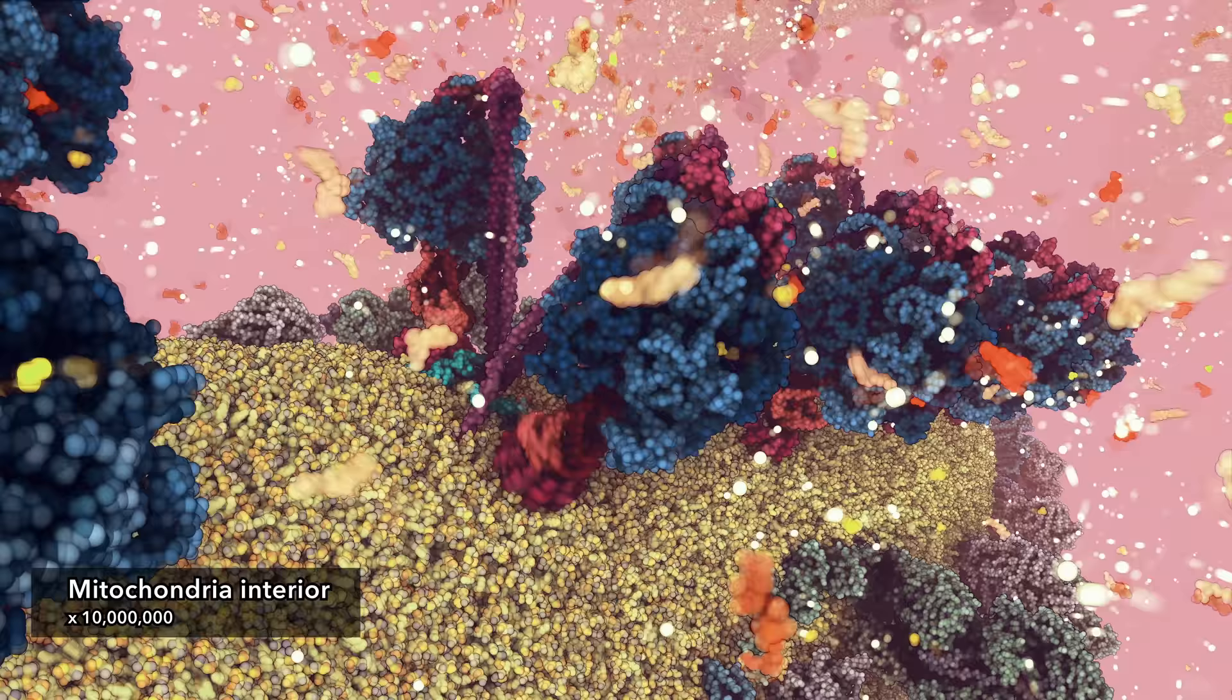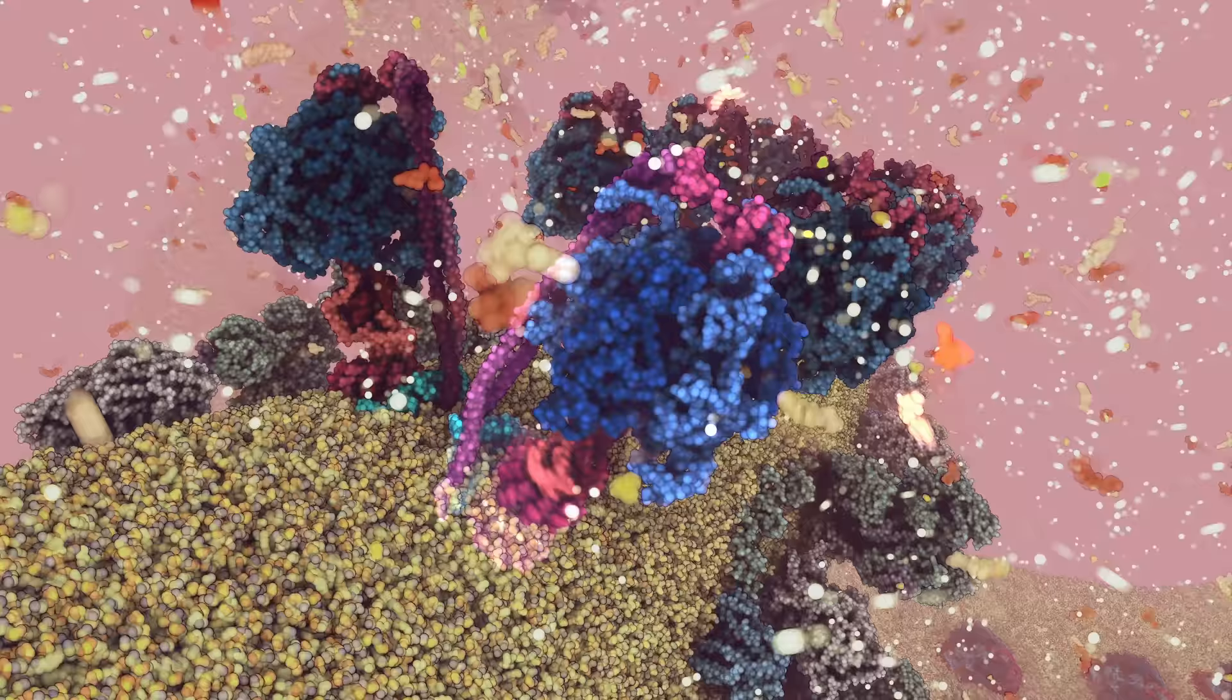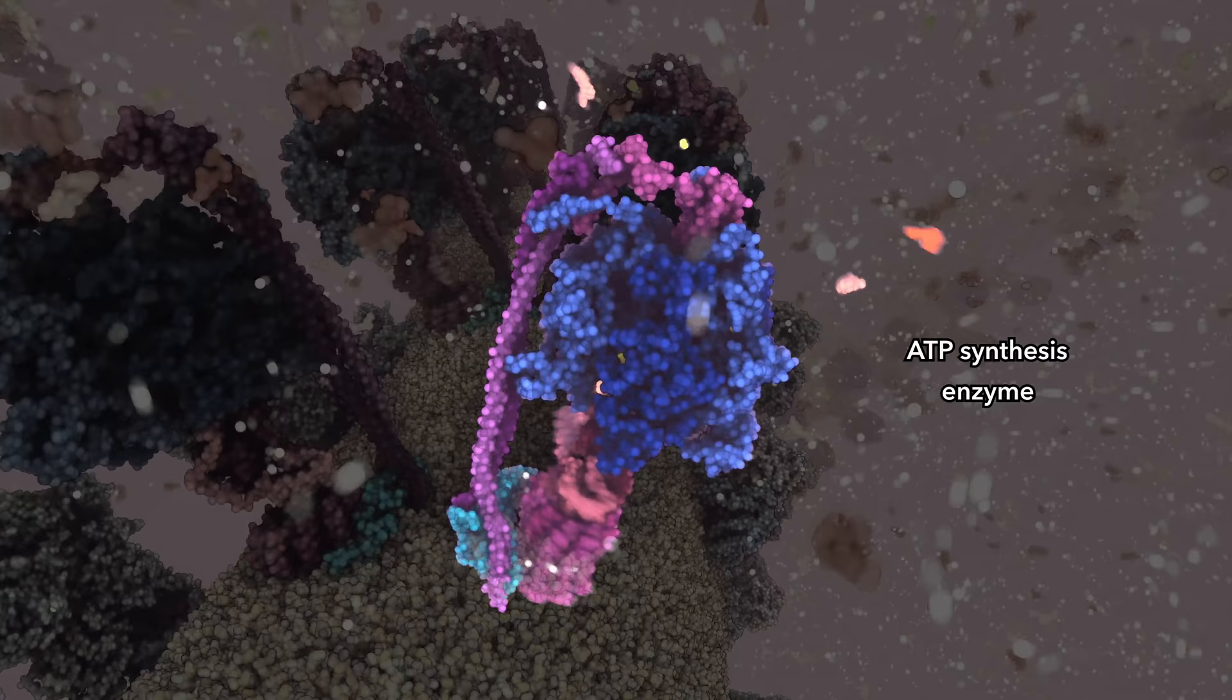So where does your ATP come from? Deep inside your mitochondria, rows of molecular motors generate ATP, the molecule essential to all life on Earth.